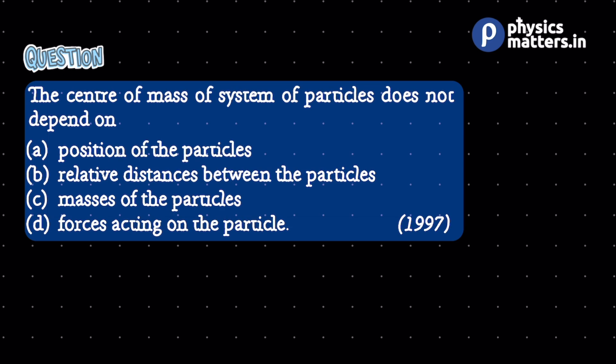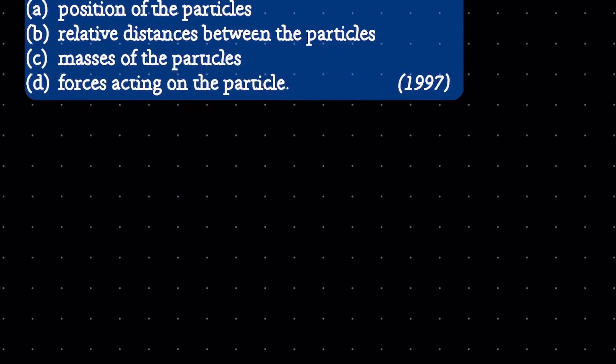The thing is, you can see that the position of the particle definitely depends. We know that. We know the centre of mass formula, that is, position of centre of mass R_COM is equal to M1*R1 plus M2*R2 plus M3*R3, etc. If I consider there are three particles, all divided by M1 plus M2 plus M3.